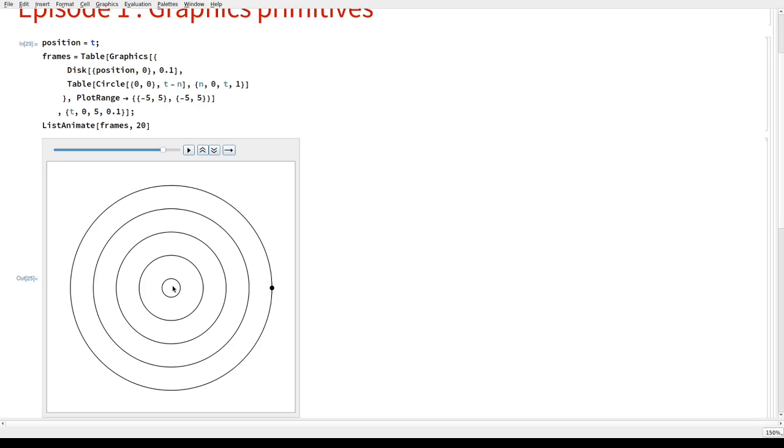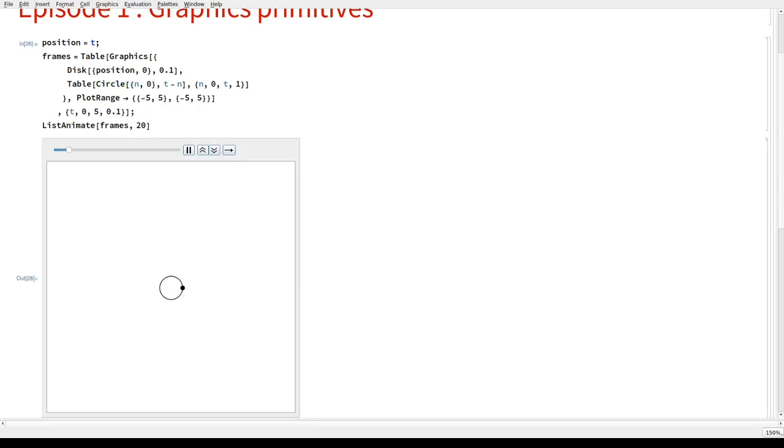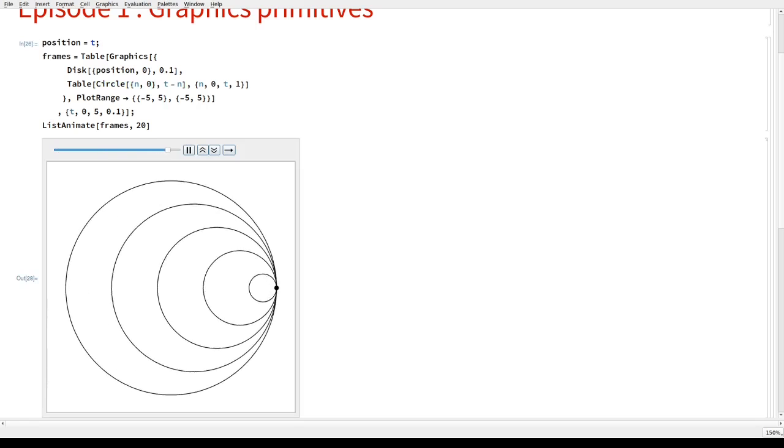So, what we want is to change the position of each circle. But remember, each circle must be centered at a position that is equal to the position when it was generated. So, not position of time, but position of n.